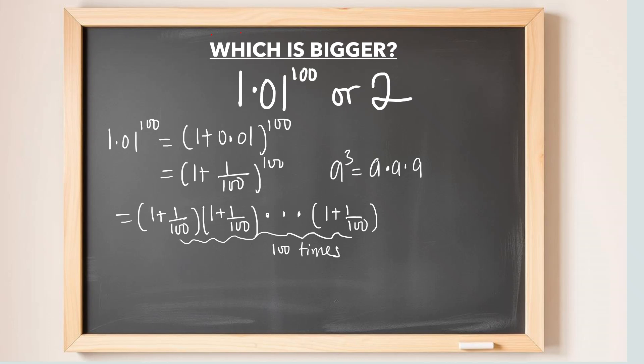So, using the same rule, we have 1.01 to the power of 100 written as that repeated product. Let me call this equation 1. I'm going to come back to equation 1.